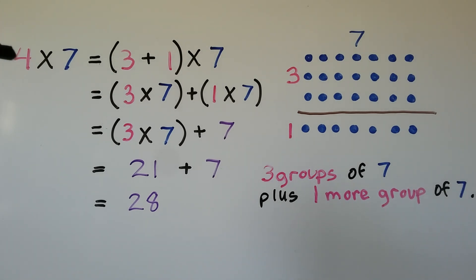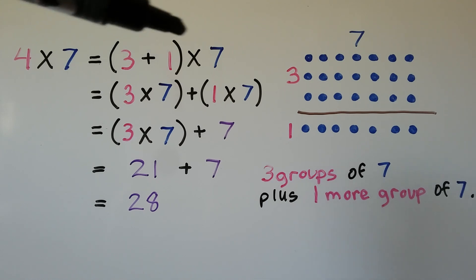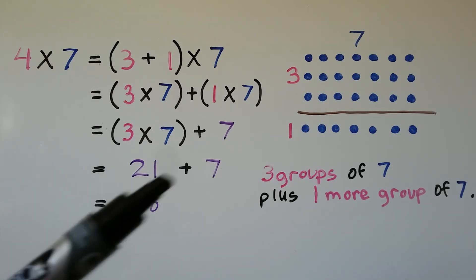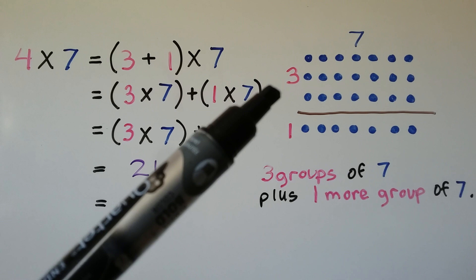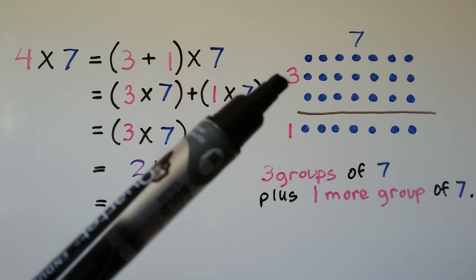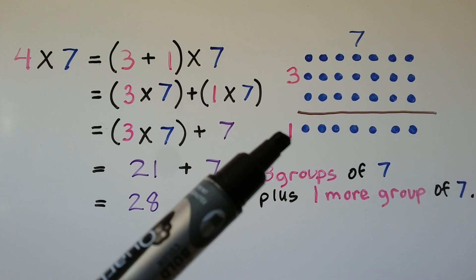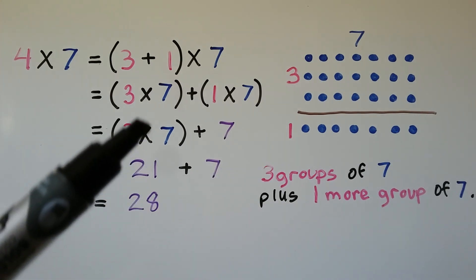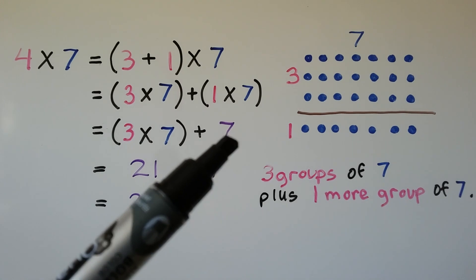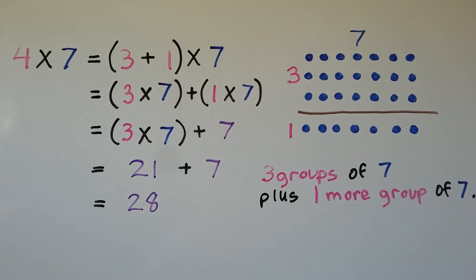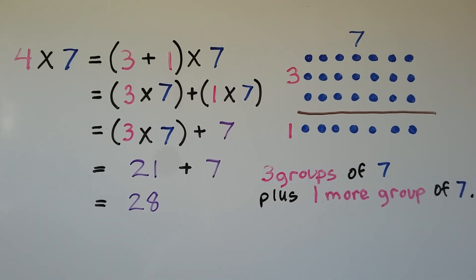We can also break apart 4 times 7 into (3 plus 1) times 7. We can do 3 times 7 if we already know the answer, and add 1 times 7 to that. So we do 3 times 7 plus another 7. 3 times 7 is equal to 21, plus 7 more, equals 28. We do 3 groups of 7 plus 1 more group of 7.